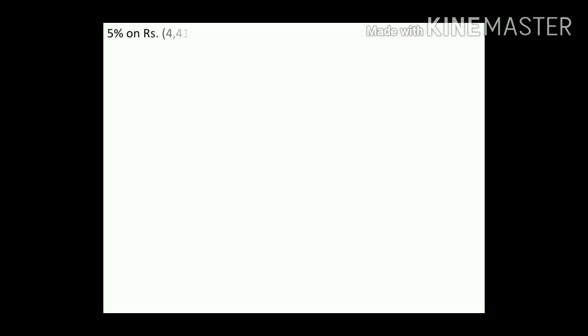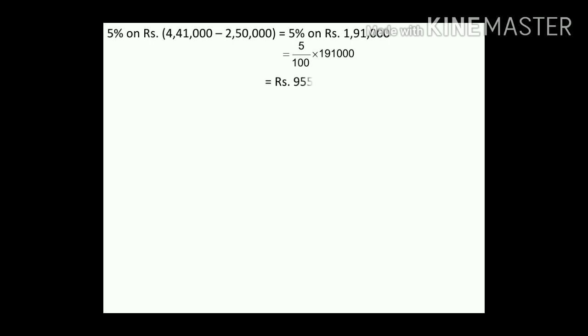Now, 5% tax on rupees 4,41,000 − 2,50,000 = 5% on rupees 1,91,000. That is 5/100 × 1,91,000 = rupees 9,550. This is the income tax.